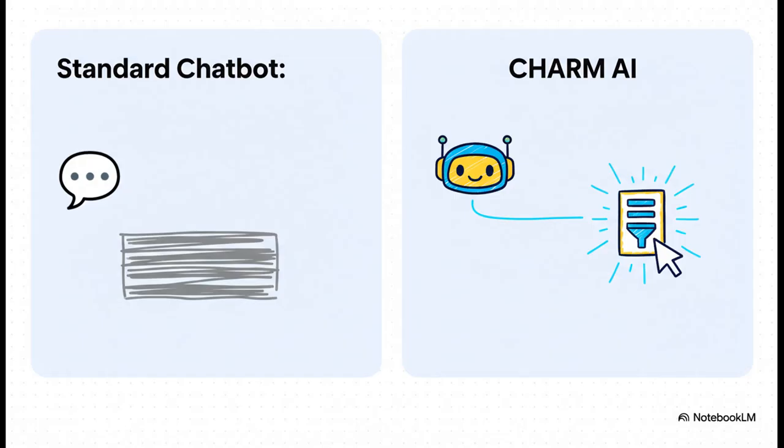This slide shows the difference perfectly. A normal chatbot gives you a wall of text instructions, but Charm's AI is actually connected to the interface itself. So when it says 'here's the unread filter,' you can literally hover your mouse over those words in the chat, and the actual button on the screen lights up. It shows you, it teaches you, and it acts for you. It's a totally different experience.